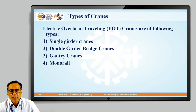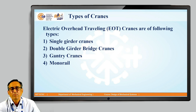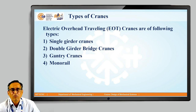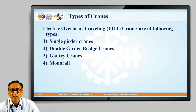There are different types of cranes. There is a jib crane, there is a tower crane, and many other types. But we are going to focus on electric overhead travelling cranes because in the majority of mechanical heavy duty industries, these electric overhead travelling cranes are used. These electric overhead travelling cranes are basically of four types: the single girder crane, the double girder bridge crane, the gantry crane, and the monorail.